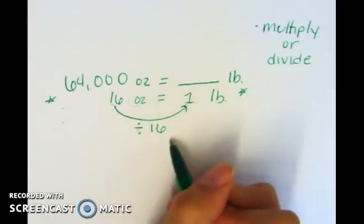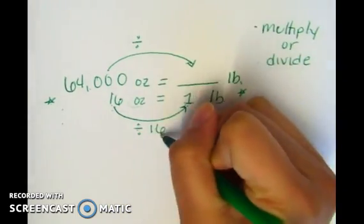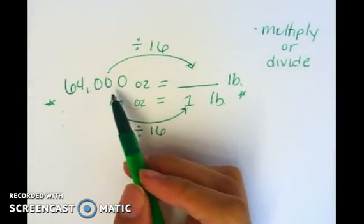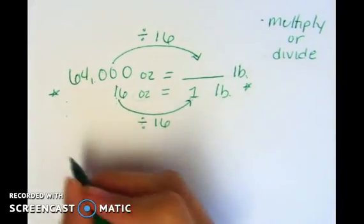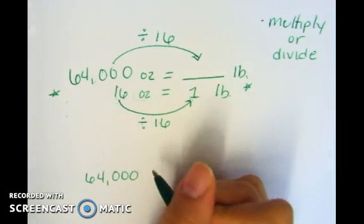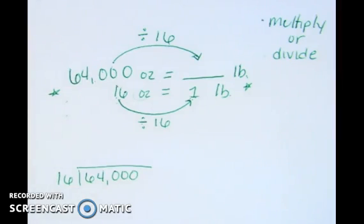So if I do it to the bottom, I'm going to go ahead and do the same thing — the same operation — to the top. I'm also going to divide by 16. I know that 64,000 ounces divided by 16 is going to give me how many pounds I have. Since I don't know that right off the top of my head, I'm going to set up my division problem. Go ahead and pause the video and solve the division problem, and when you are done, come back to check your work. Push play once you've found the quotient.